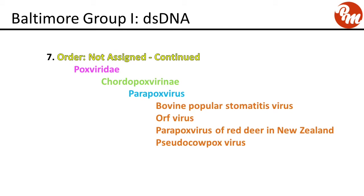Continuing in family Poxviridae, subfamily Cordopoxvirinae: genus parapoxvirus includes bovine papular stomatitis virus, orf virus, parapoxvirus of red deer in New Zealand, and pseudocowpox virus.